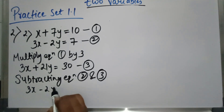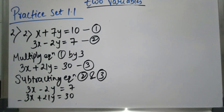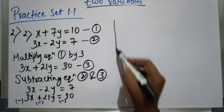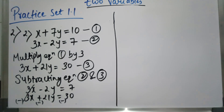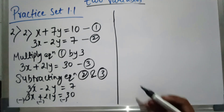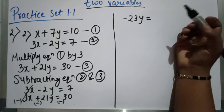3x minus 2y equal to 7, and 3x plus 21y equal to 30. We apply subtraction — the signs of the lower equation change: plus becomes minus. So 3x minus 3x cancels. Then minus 2y minus 21y: minus minus is plus, so 21 plus 2 gives 23, with a minus sign — giving minus 23y equal to 7 minus 30.